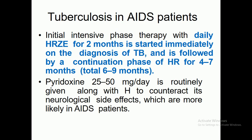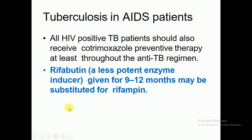For tuberculosis in AIDS patients, initial intensive phase therapy with daily HRZE for two months is started immediately upon diagnosis of TB, followed by a continuation phase of HR — isoniazid and rifampicine — for four to seven months, for a total of six to nine months. Pyridoxine 25 to 50 mg per day is routinely given to counteract neurological side effects, which are more likely in AIDS patients. All HIV-positive TB patients should also receive co-trimoxazole preventive therapy throughout the anti-TB regimen.